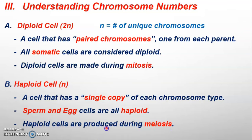Sperm or egg are not made during mitosis — those are just body cells, or another way to look at them, diploid.